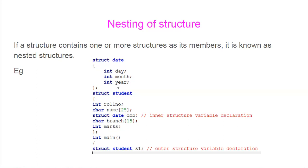Now we are going to declare this as another data type within another structure called student. Structure student is defined here with role number and name. Now see here, date is defined inside just like how we have defined a character — we are defining this structure inside to declare a date of birth of the students. The structure variable name is DOB and the structure is struct date. So date is of type structure. In the main program we declare structure student S1.